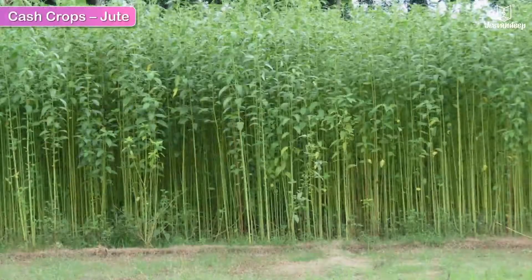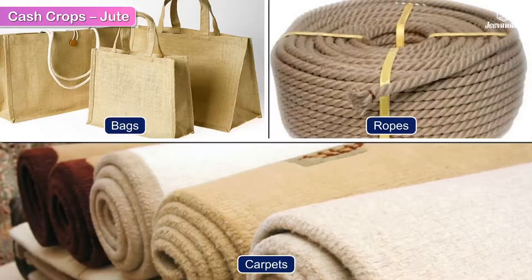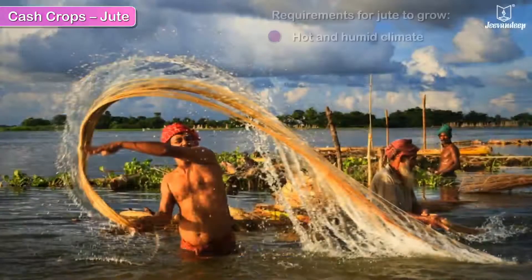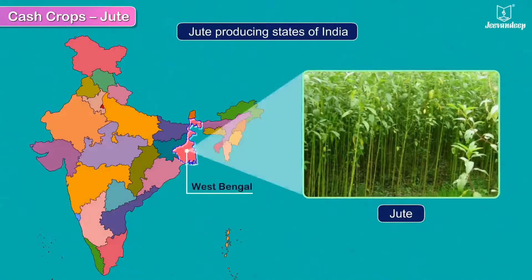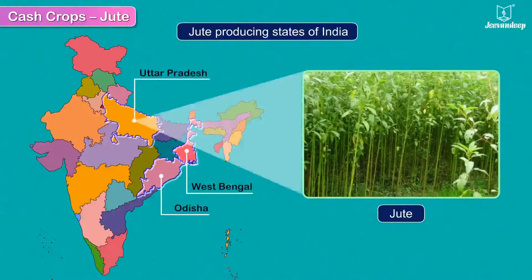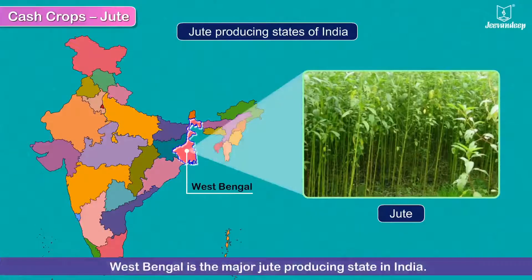Jute is used to make items such as bags, ropes, carpets, and other useful things. Jute cultivation needs a hot and humid climate to grow well. This crop is largely cultivated in West Bengal, Odisha, Uttar Pradesh, Bihar, Assam, and Tripura. West Bengal is the major jute-producing state in India.